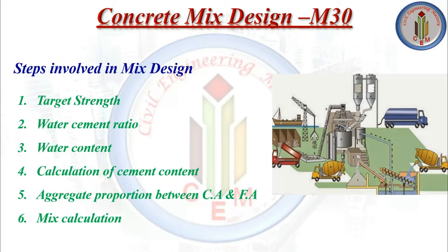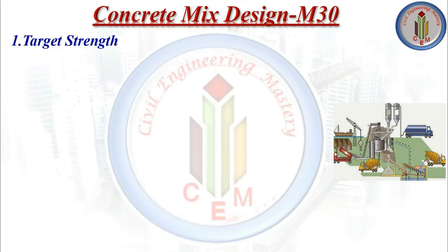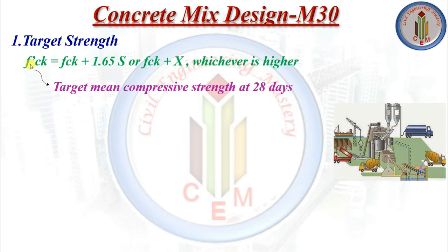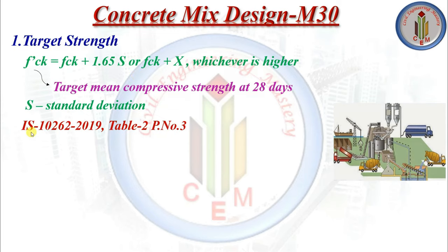First we need to find out the target strength. The formula is: f'ck = fck + 1.65s, or fck + x — whichever is higher, that value we take as the target strength. Here f'ck is the target mean compressive strength at 28 days, and s is the standard deviation.